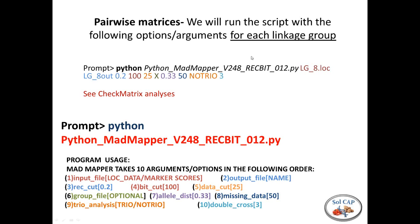The second thing we need to do within MADMapper is export the pairwise matrices, which we'll use in further analyses such as check matrix. Again, we use the same MADMapper script as initially, but the input file is now by linkage group — in this case linkage group 8. In PEPPER, for example, we have 12 linkage groups, so we do this 12 times, once for each linkage group. You use the exact same parameters and options, just change the input file and output file name. MADMapper automatically generates the pairwise matrices format for each linkage group.